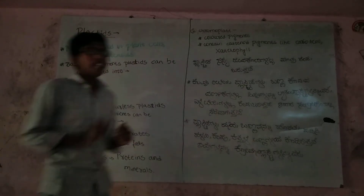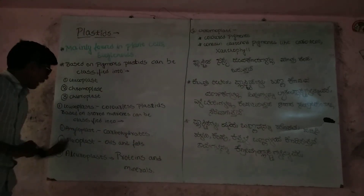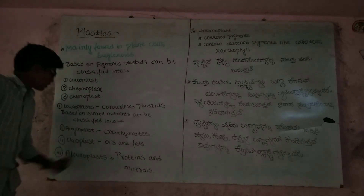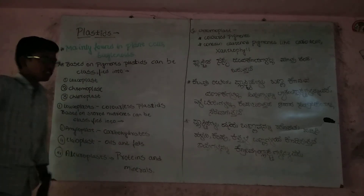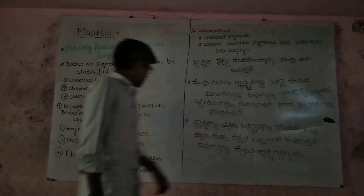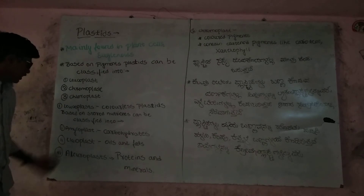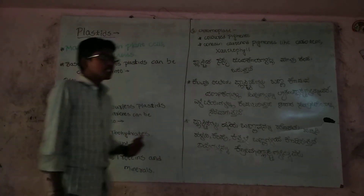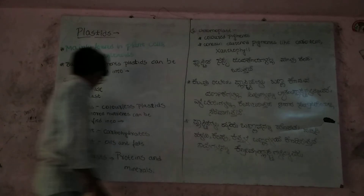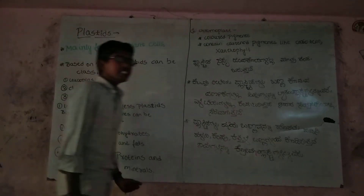They are classified into three types: Amyloplast, Elaioplast (or Aleuroplast). Amyloplast stores carbohydrates. Elaioplast stores oil and fats. Aleuroplast stores proteins and minerals.